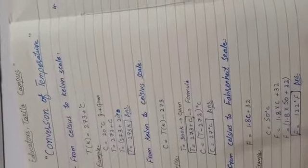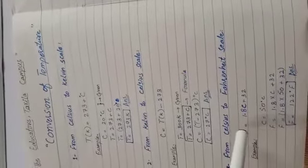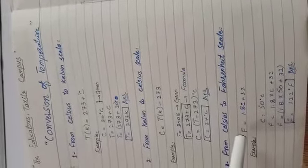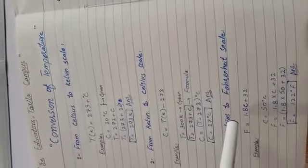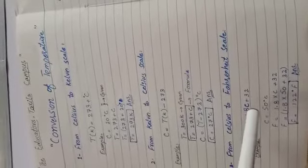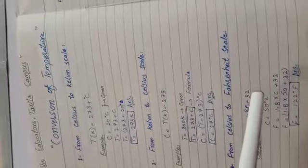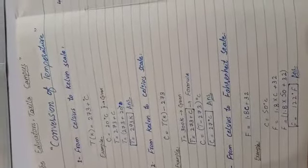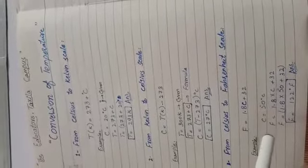So to convert to the Fahrenheit scale, we use the formula: F = 1.8 × C + 32. Let's look at an example using this formula.